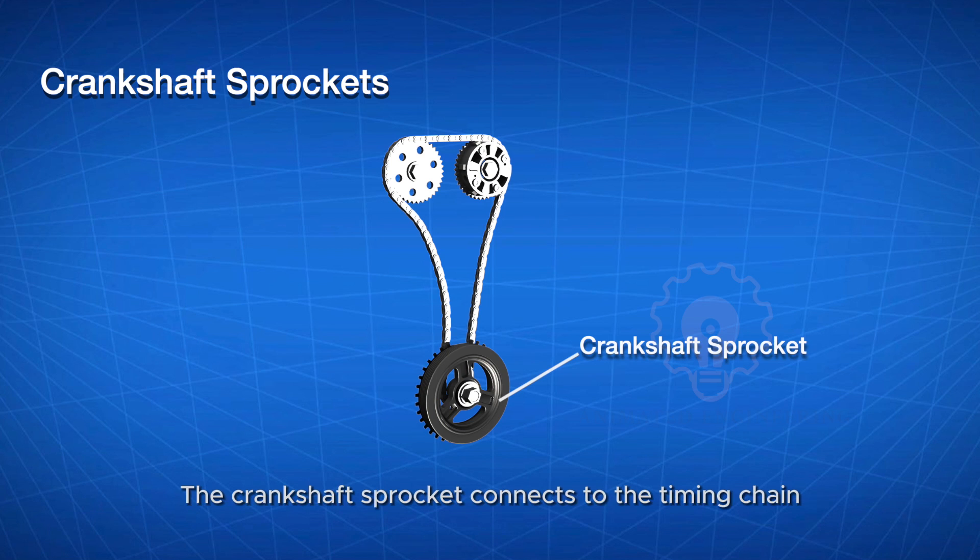Crankshaft sprocket: The crankshaft sprocket connects to the timing chain and is responsible for synchronizing the rotation of the crankshaft with the camshaft. This coordination is vital for maintaining precise valve and piston timing.